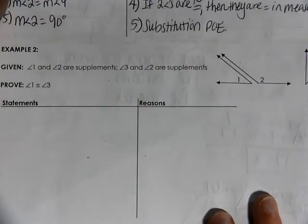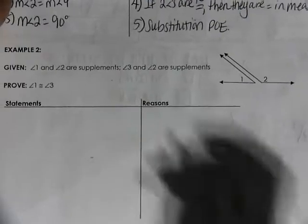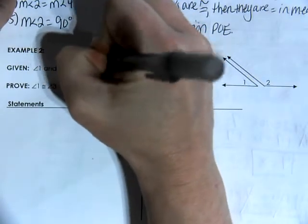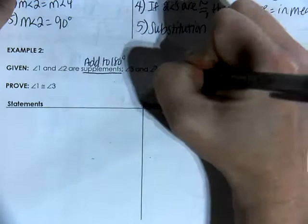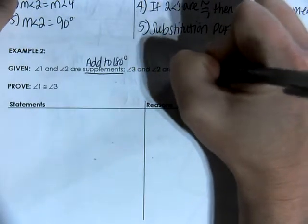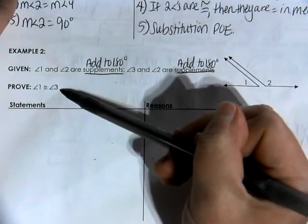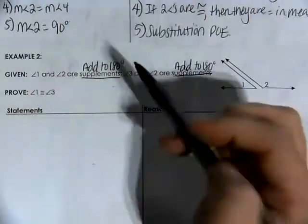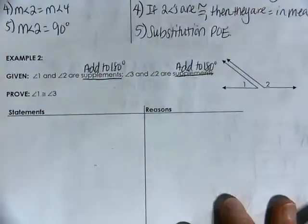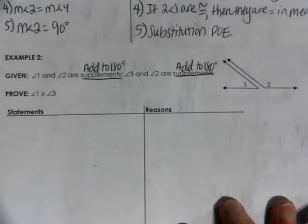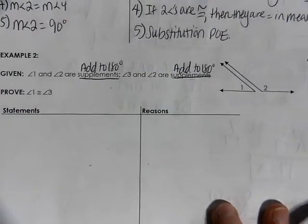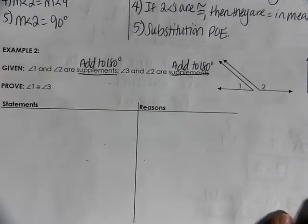Let's look at example number two. We are told that angle one and angle two are supplements, and angle three and angle two are also supplements. What do we know about supplementary angles? They are two angles that add to 180 degrees. So I want to prove that angle one and angle three have to be congruent to each other. We'll be working with an equal sign and then eventually a congruent symbol.